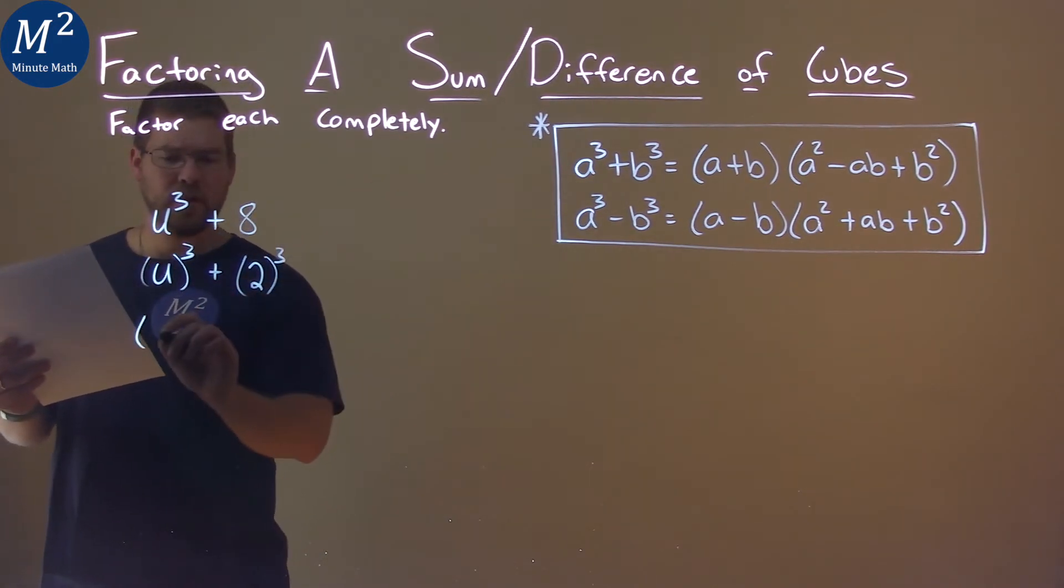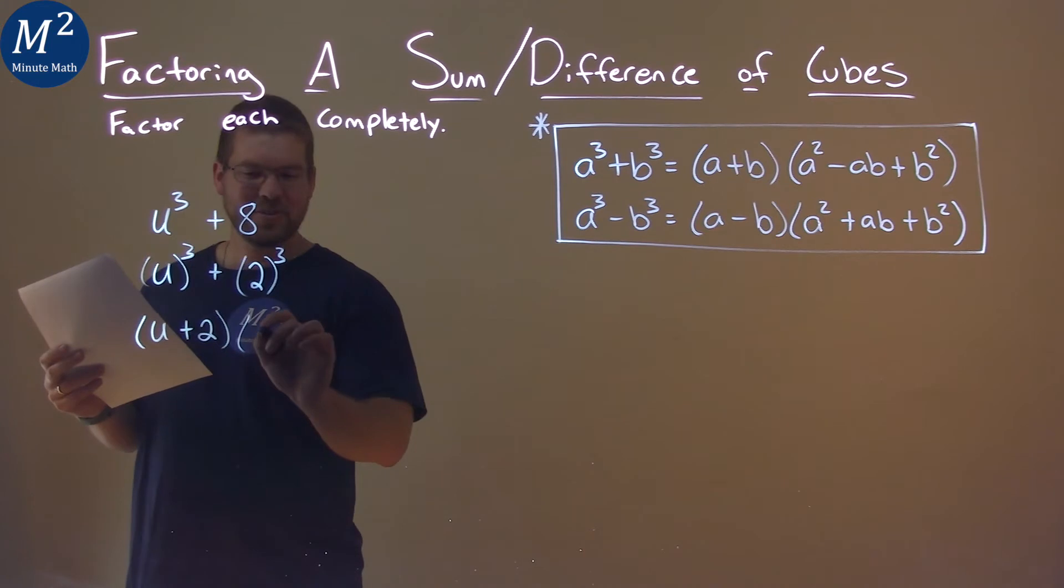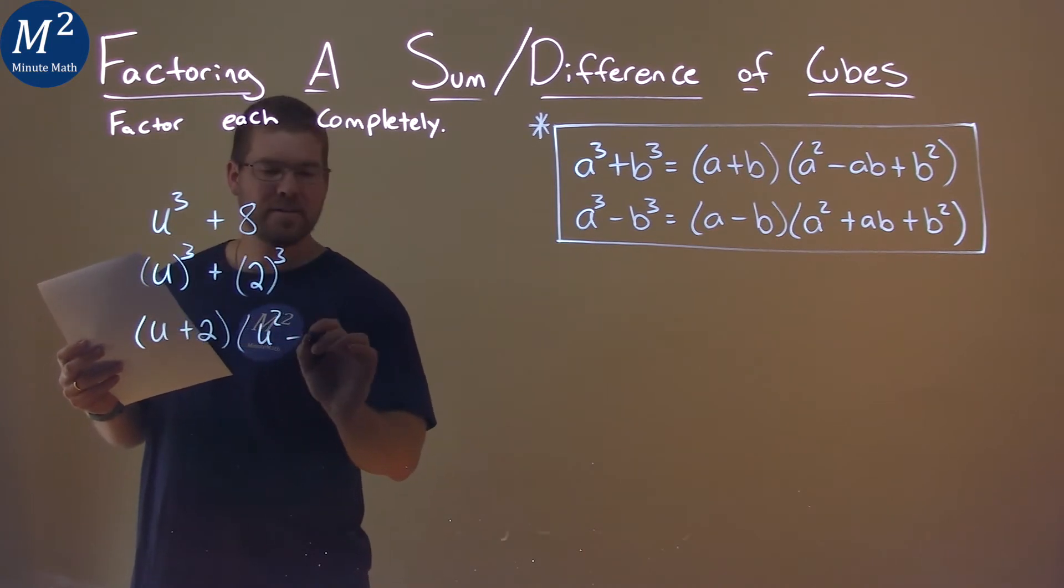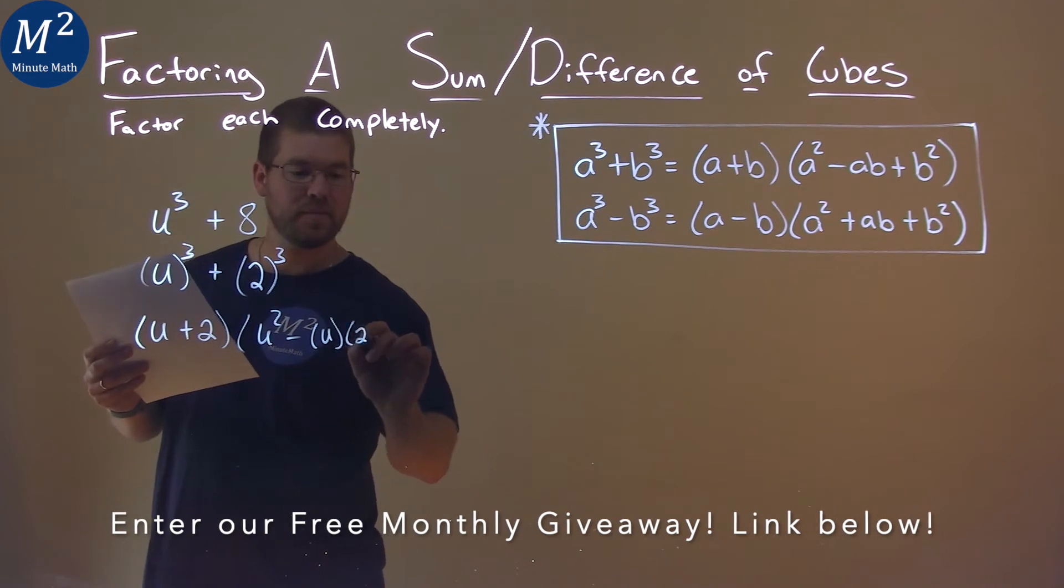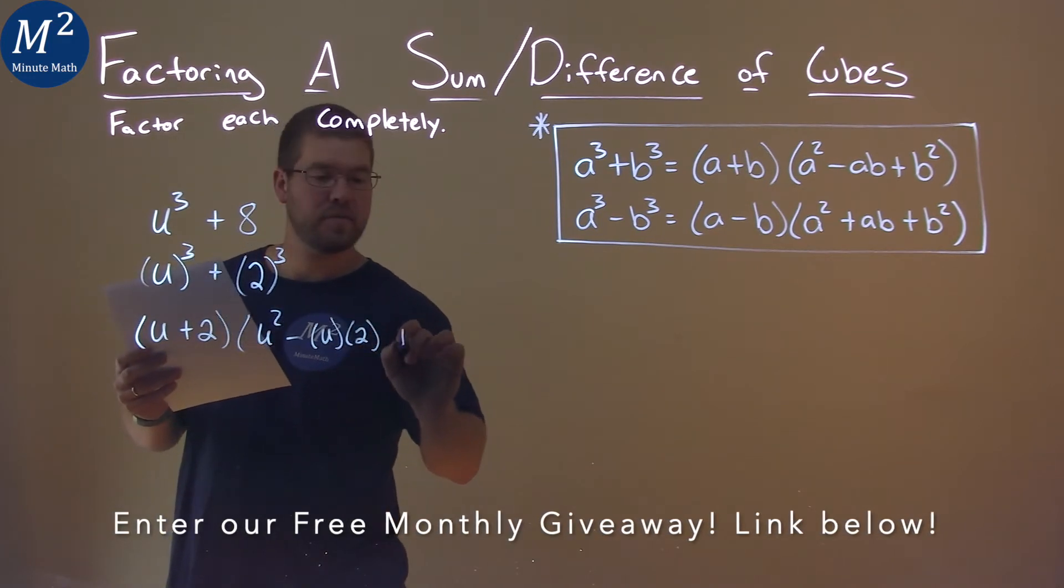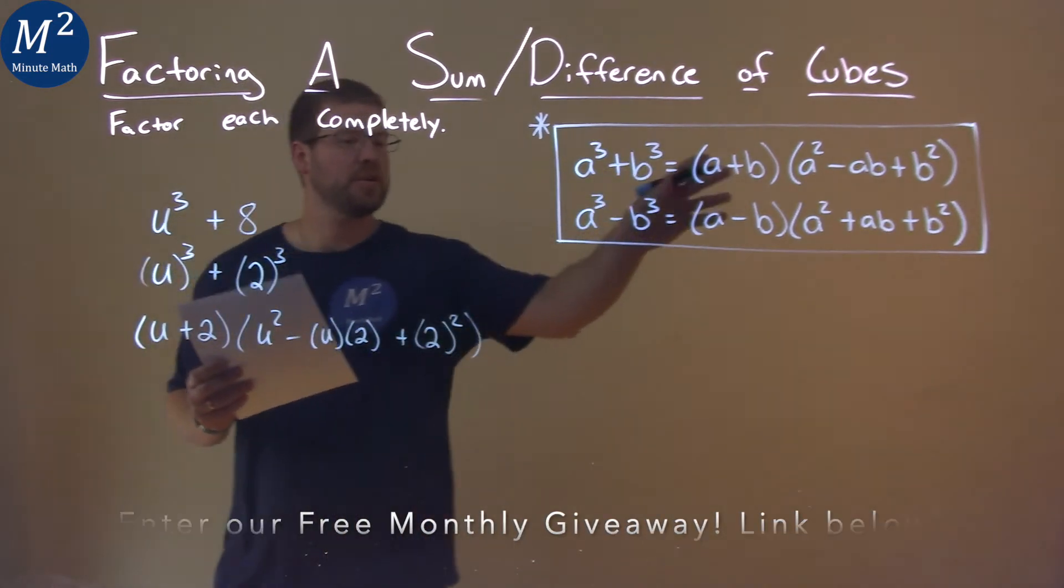So we follow our formula, and we have u plus 2, hashtag u2. Bad joke. u squared minus u times 2 plus 2 squared. Just follow the formula, make sure you don't forget anything.